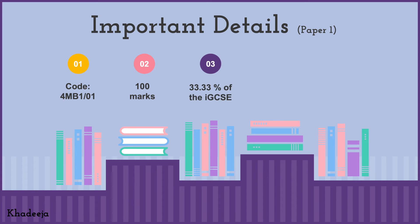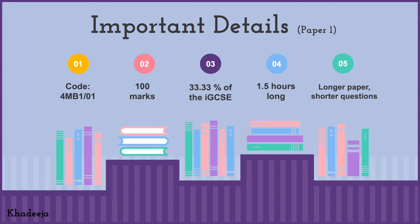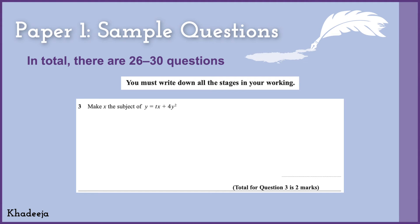Paper One is out of 100 marks. It constitutes 33.33% of the entire Maths IGCSE. It is 1.5 hours — 90 minutes — long. And while it is a longer paper than Paper Two in terms of question count, Paper Two actually gives you more time: Paper One has 90 minutes whereas Paper Two has two hours and 30 minutes. Paper One has more questions, but the questions are shorter.